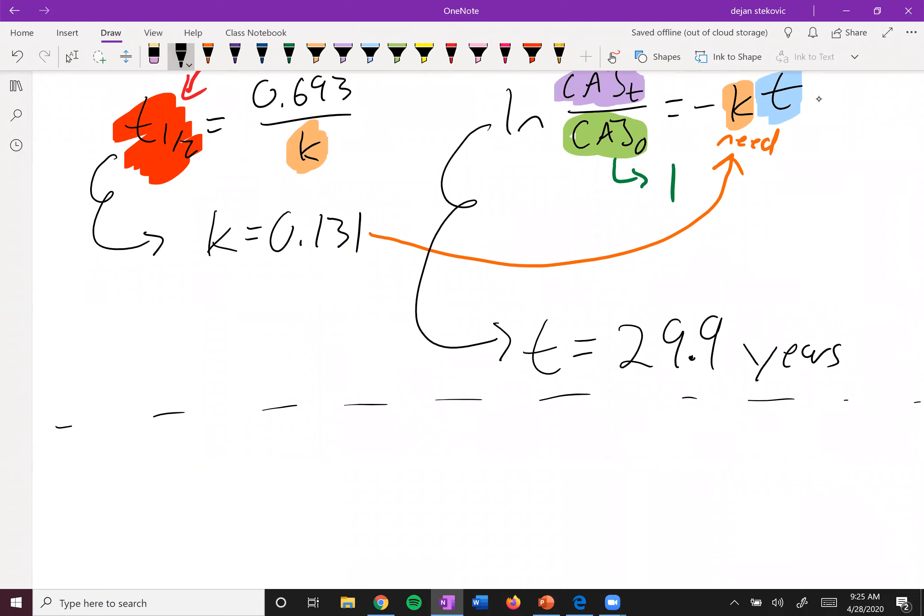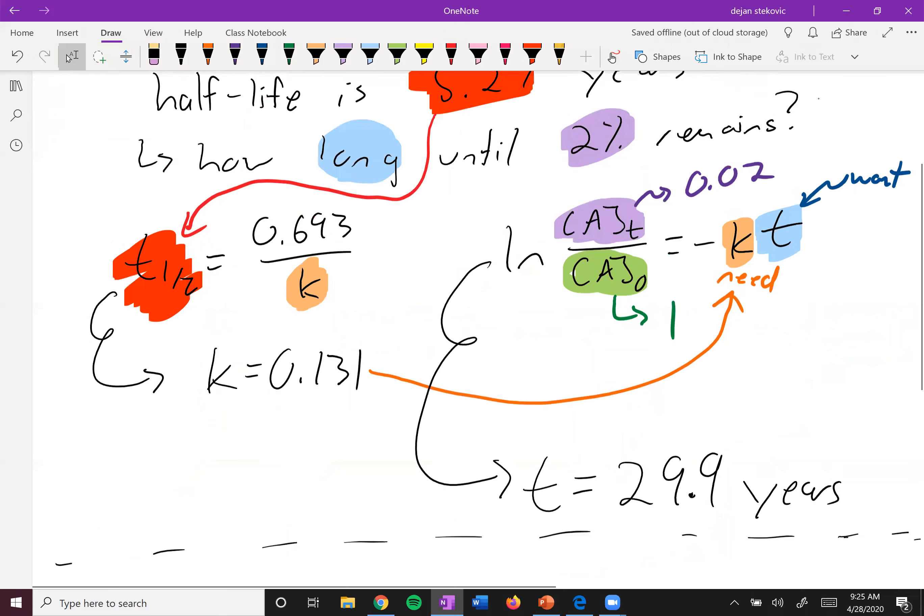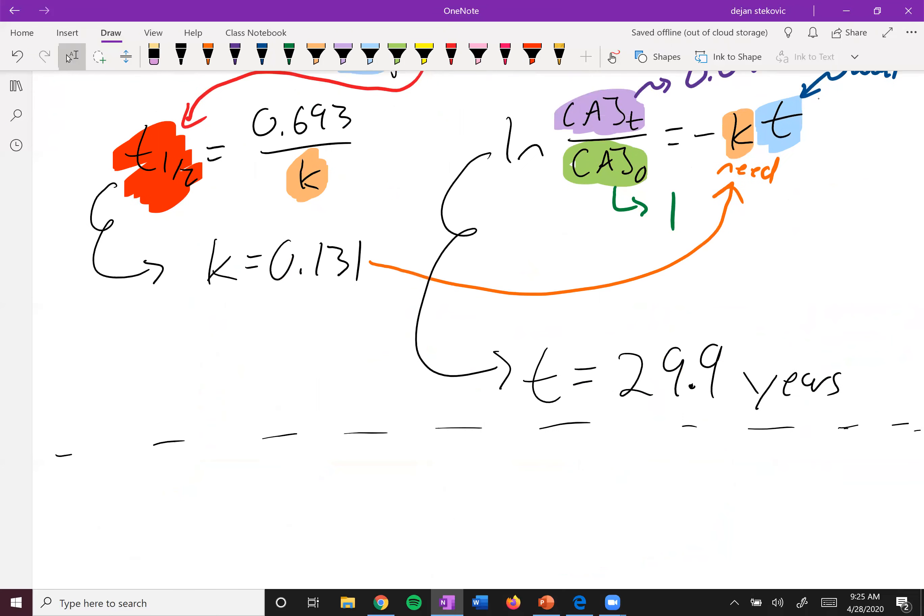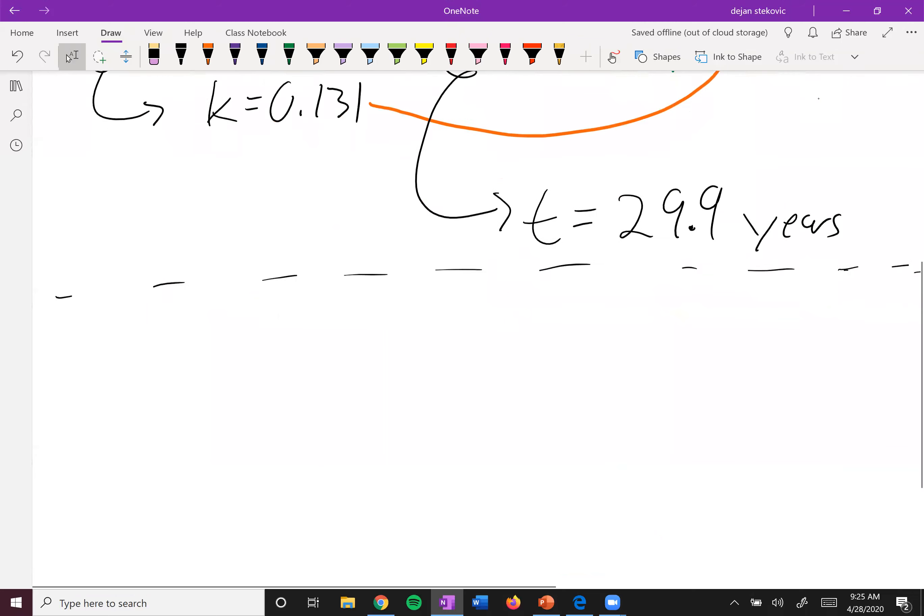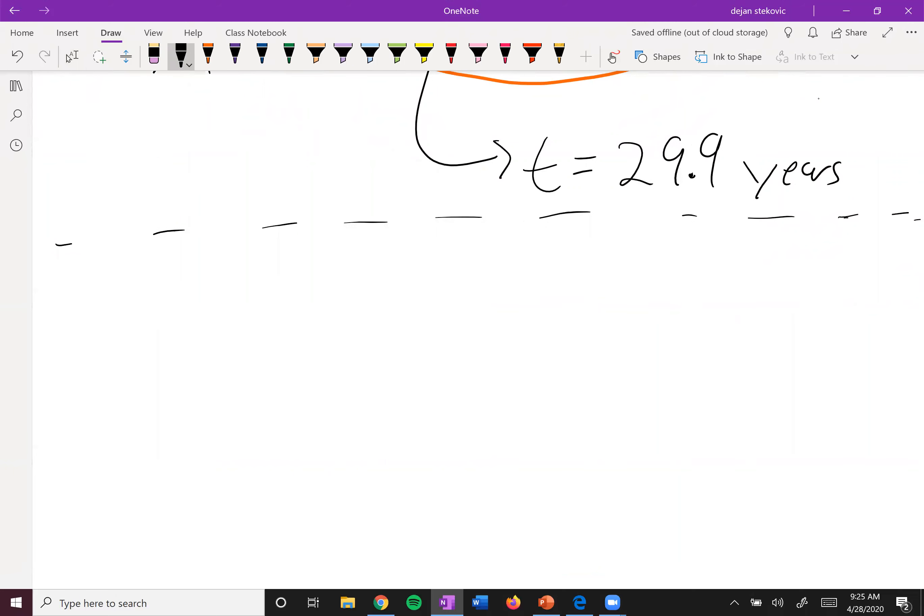In real life, it's actually done a slightly different way. How did you know that only 2% is left? You'd have to know the original concentration. The question is, what if you don't know the original concentration, which we often don't?